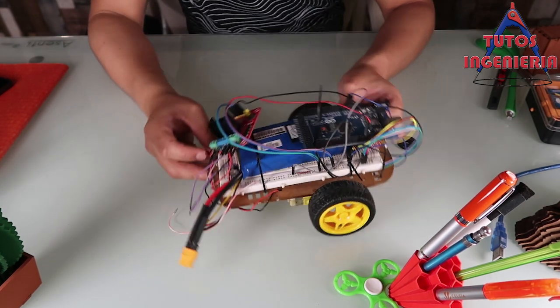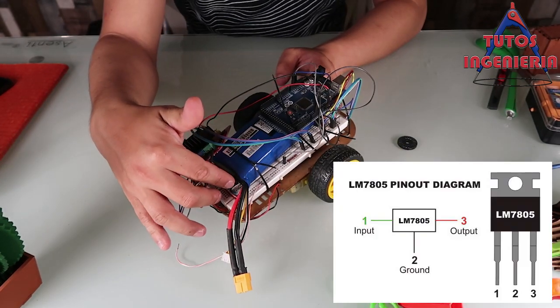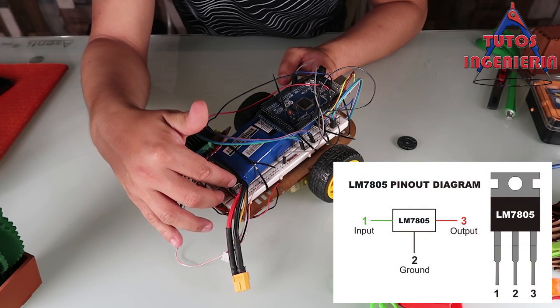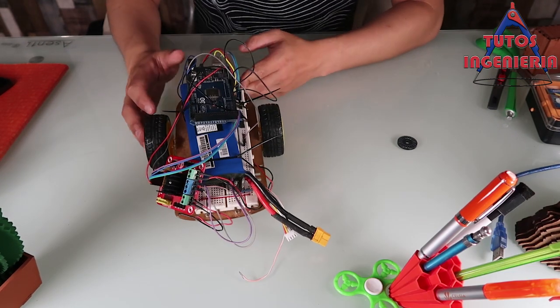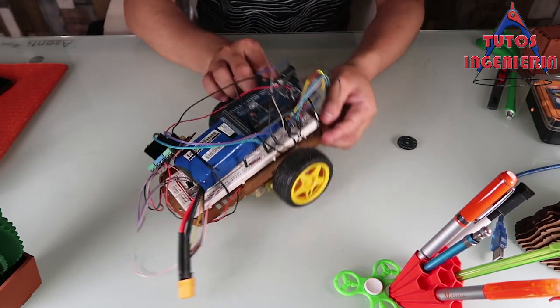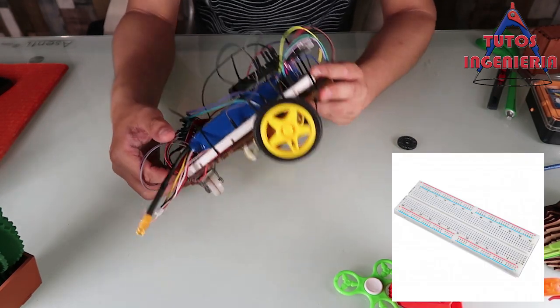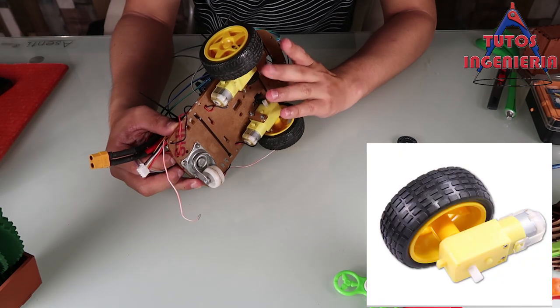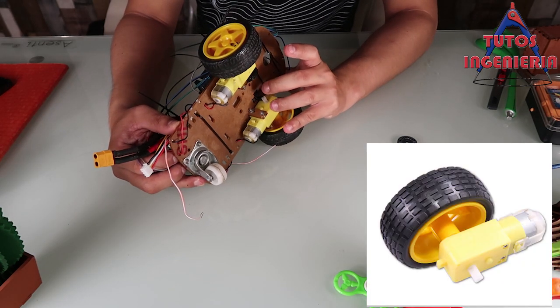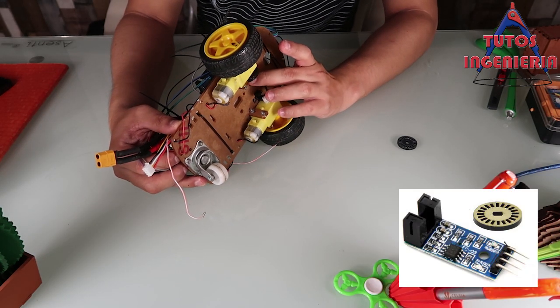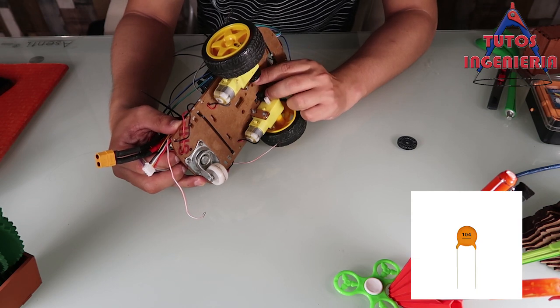Also we use a LM7805, later I will give you the exact specification. We use a protoboard, two DC motors with wheels, and two encoders. Finally, two ceramic capacitors 104.